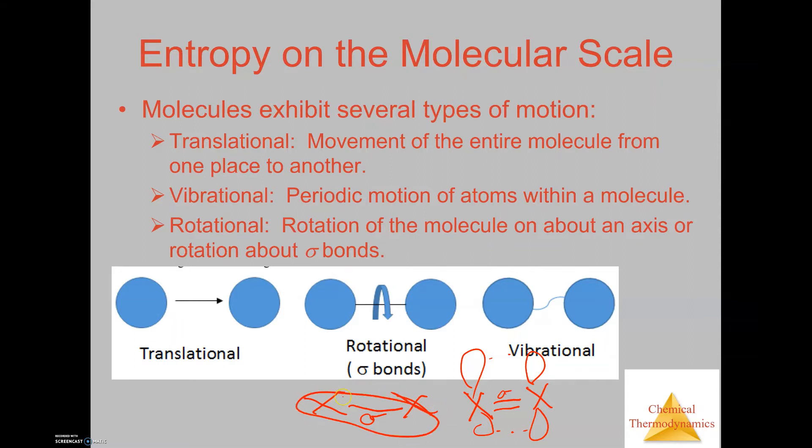Whereas if you only have the sigma bond, this molecule is able to rotate 360 degrees around this bond. When we look at these two molecules, we could predict that this molecule here has a higher entropy than this molecule over here.